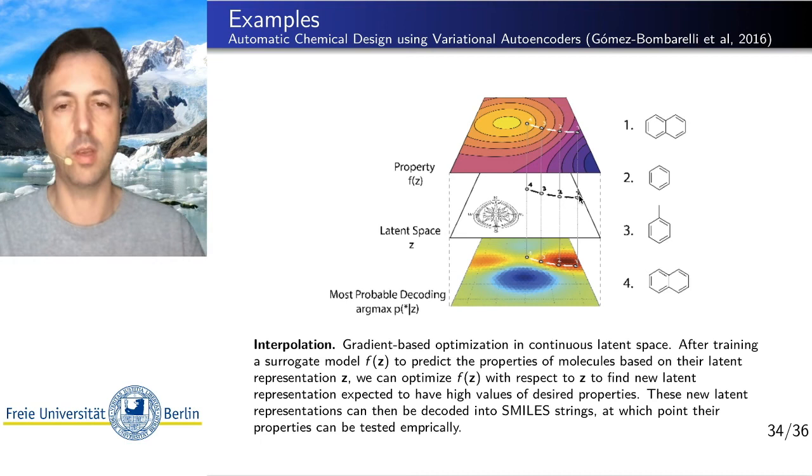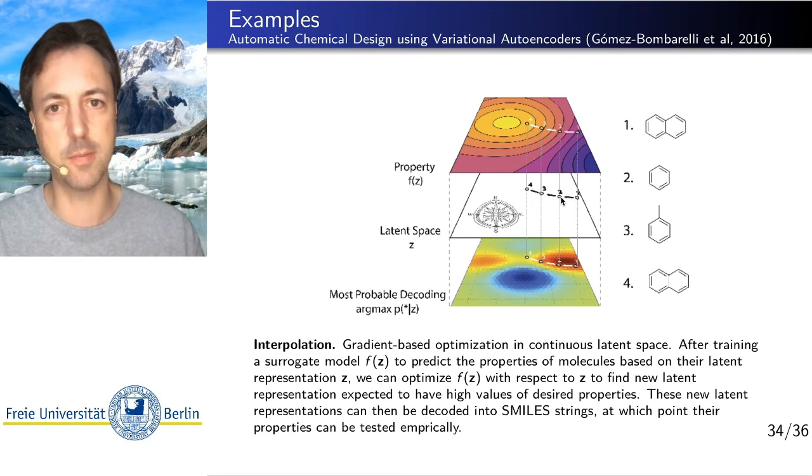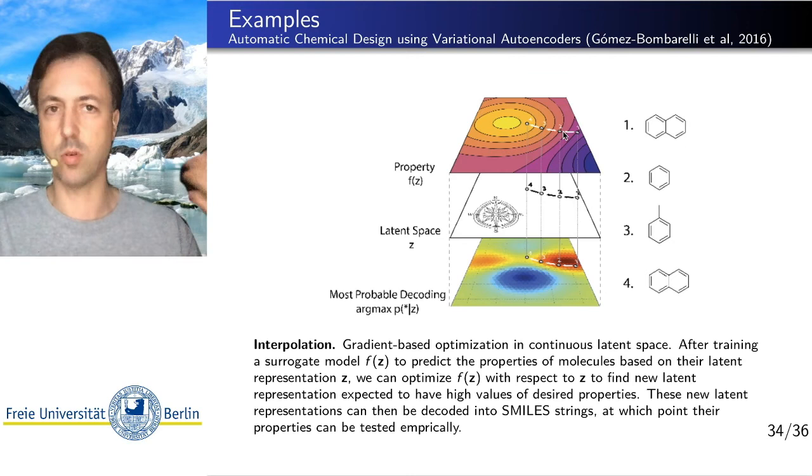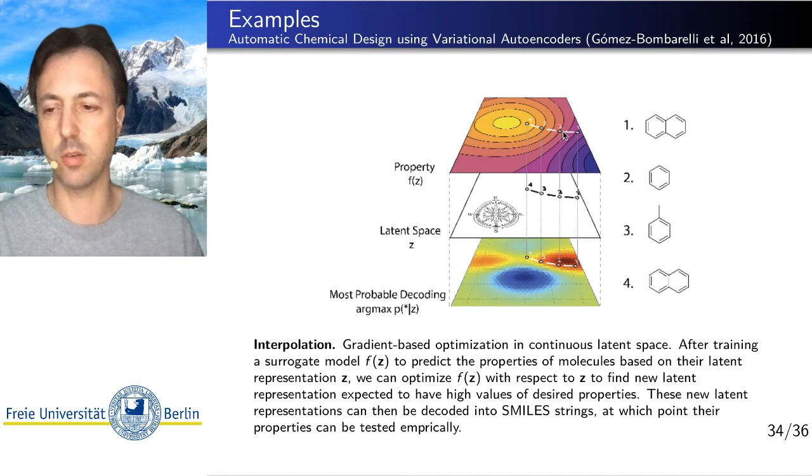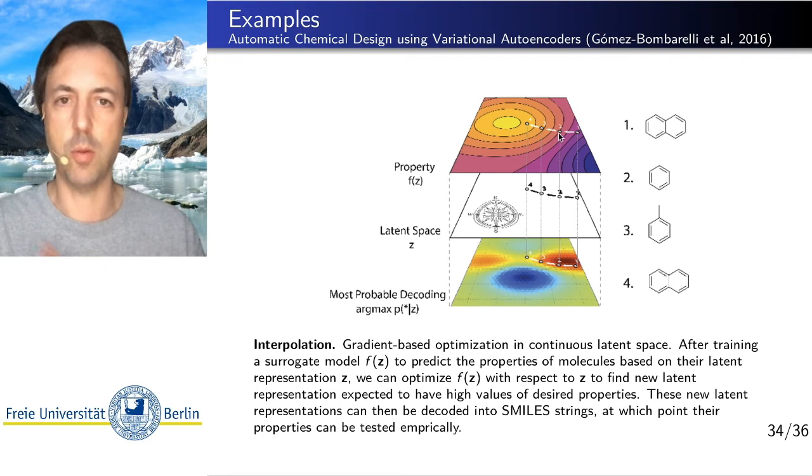So you start with the molecule you know which is doing a decent job. And then you are searching around this molecule in latent space. You ask the decoder what molecule does this correspond to. You compute its properties. This can be done using quantum chemical simulations. So you can compute for example the fluorescence intensity in a certain frequency band with quantum chemical simulations. And then you can optimize your molecule.